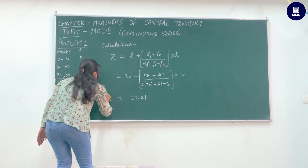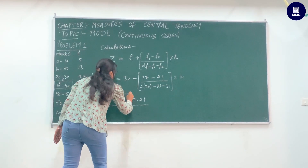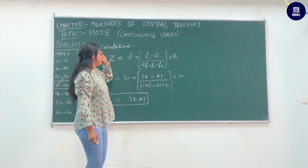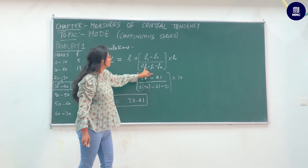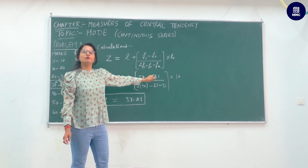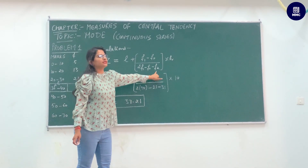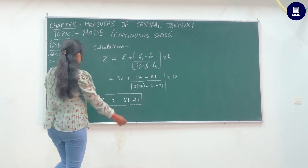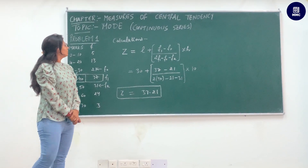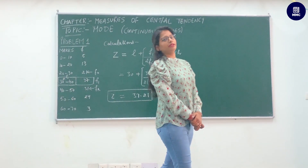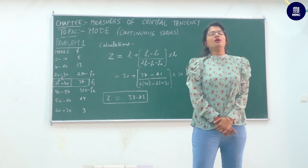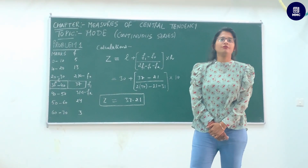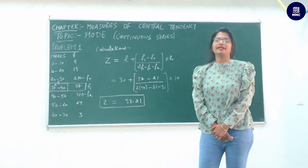Always put your answer in a box. There is also a memory trick for the formula: think of the subscripts as 1, 0, 2 — so F1 minus F0 over 2F1 minus F0 minus F2, remembering '1, 0, 2'. So this was finding the mode in continuous series using the grouping table method. I hope you learned from this video. Please share your feedback and we will come soon with the next video. Thank you.